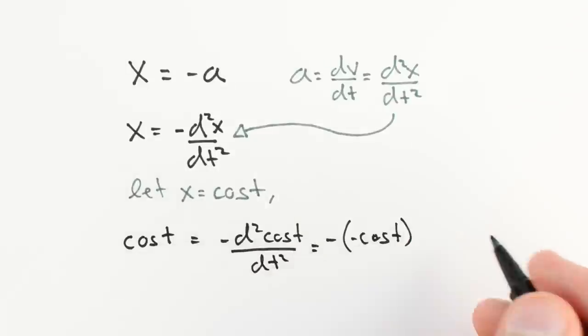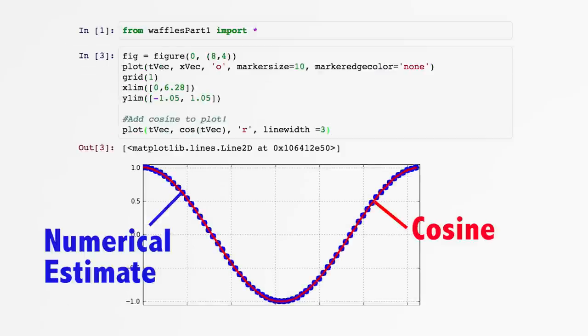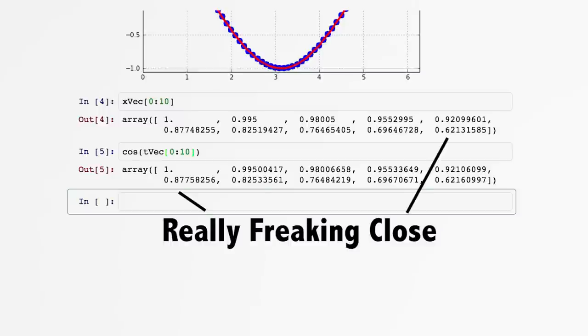If we go back to our numerical analysis from part one, where we computed the motion of our springs step by step, we can compare our resulting positions to a cosine function and see that they matched the third decimal place.